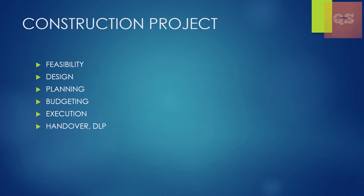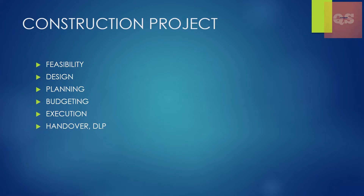This is what value engineering is all about, and it is carried out in every industry, every company, and every project by everyone involved. In a construction project, there are different stages: feasibility, design, planning, budgeting, execution, handover, and the DLP period. In the feasibility stage, decision makers come together to make decisions on an upcoming project — they discuss the location, how big it should be, and based on that decide how to save money and where the project would be more suited.